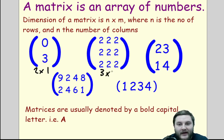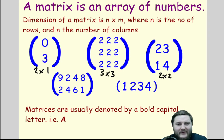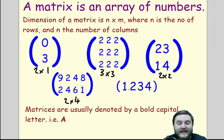This one would be a 3 by 3, and this one here would be a 2 by 2. I'll give you 10 seconds to work out the dimensions for these two matrices. You might have worked out there are two rows and four columns — this is a 2 by 4 matrix. And this one has one row and four columns — this is a 1 by 4 matrix.